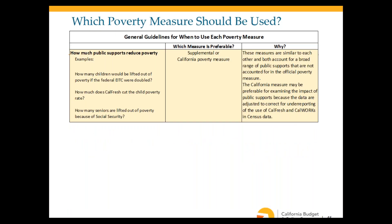To assess how much public supports reduce poverty — for example, how many children would be lifted out of poverty if the federal EITC were doubled, or how much does CalFresh cut the child poverty rate — either the supplemental or California poverty measure is preferable. These measures account for the broad range of public supports families use. The California measure may be especially preferable for questions related to CalFresh and CalWORKs, because CPM data is adjusted to correct for underreporting of those programs in census data.